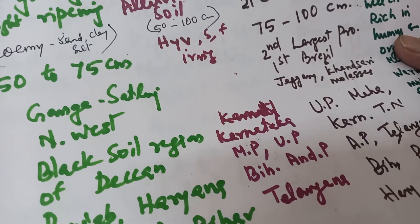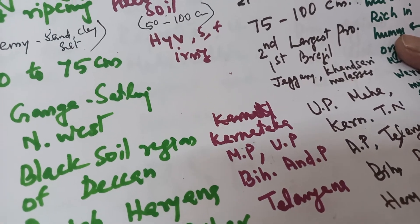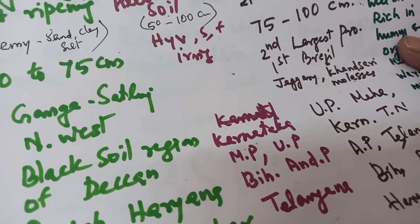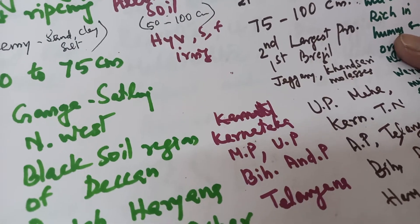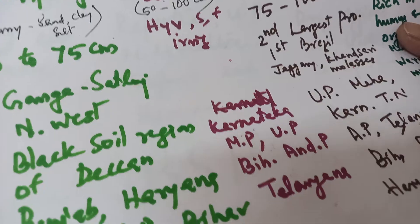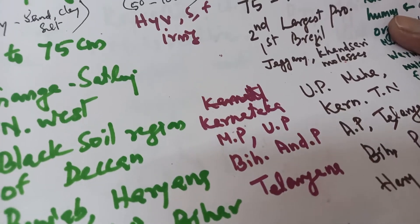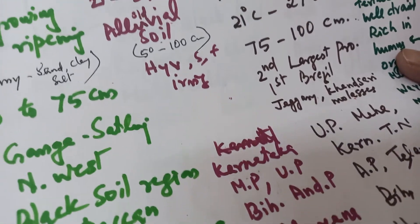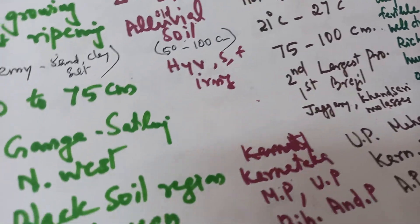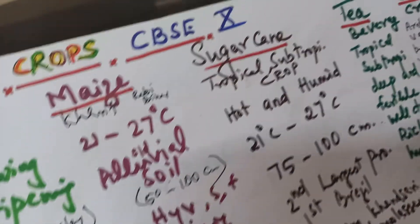The major maize growing areas are Karnataka, Madhya Pradesh, Uttar Pradesh, Bihar, Andhra Pradesh, and Telangana.